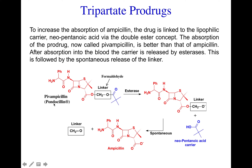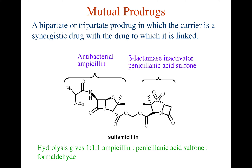This approach was used to develop a tripartite prodrug of ampicillin to improve its oral absorption. This is a registered, FDA-approved drug known as pivampicillin. Mutual prodrugs are bipartite or tripartite prodrugs in which the carrier is a synergistic drug linked to the active drug. For example, ampicillin conjugated via the double ester concept with a formaldehyde linker to a beta-lactamase inactivator gives an antibiotic with two modes of action.